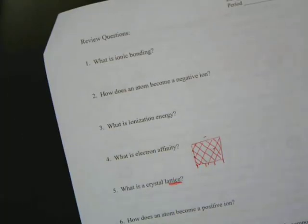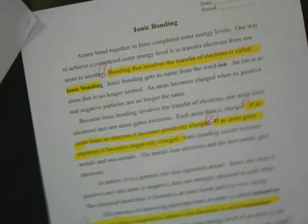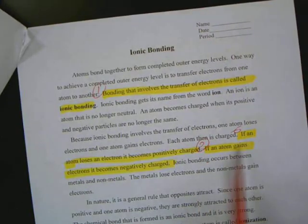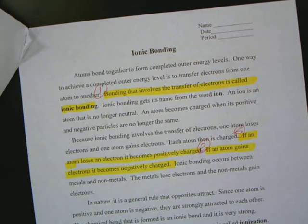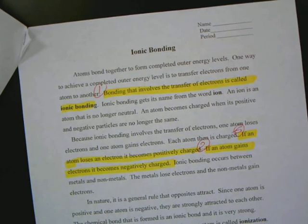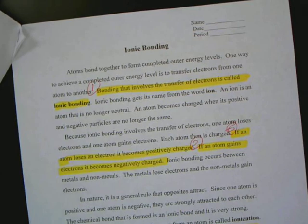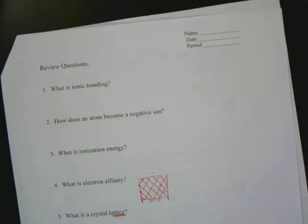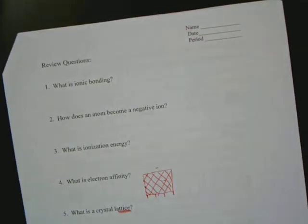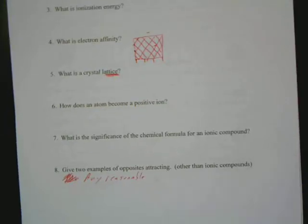Now the reason why I skipped number six is how does an atom become a positive ion? And that's back here where number two was. The sentence before it is number six. It says it becomes positively charged by losing an electron. And then the one about giving two examples of opposites attracting, really I was looking for anything, you could have said magnets. You could have said like a really nice guy and a really not nice girl or vice versa.